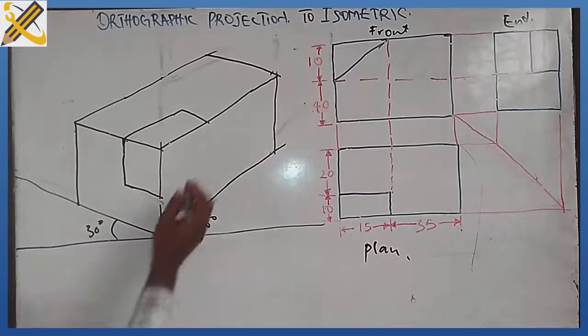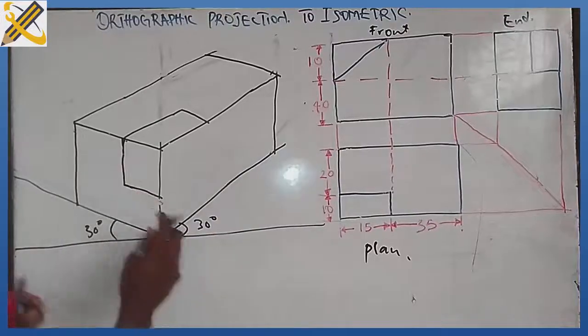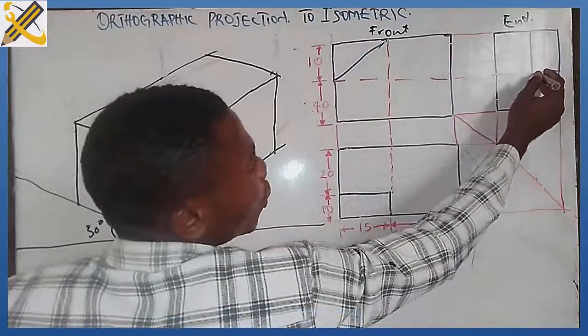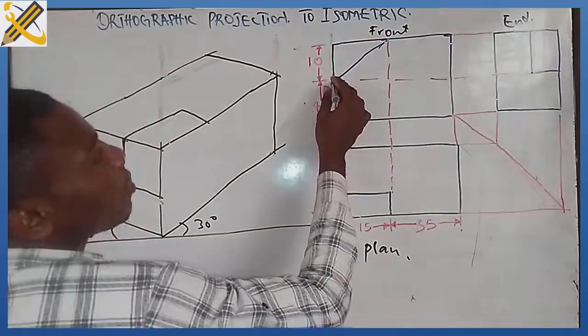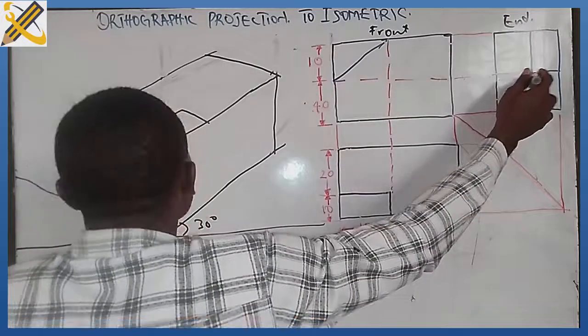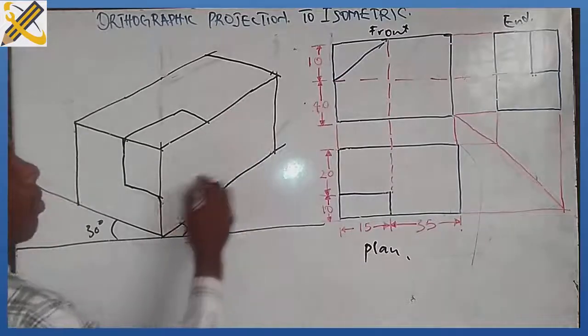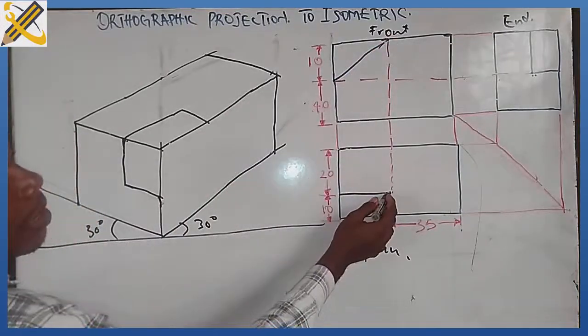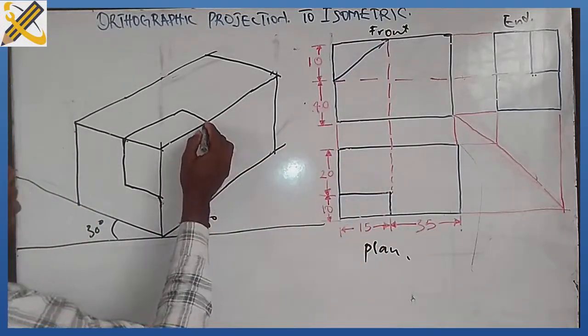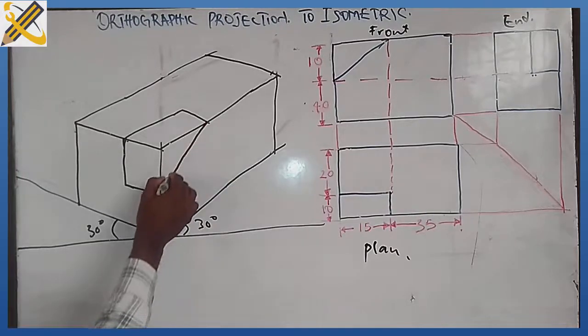Now is our front view. Take note: see this junction here aligns with here, aligns with this junction here. This is our end view, this junction here is this area, while this junction here aligns with this junction. So from the plan you see down to that level.